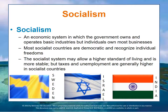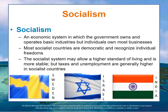Most socialist nations are democratic and they recognize basic individual freedoms. Socialist economies generally profess a kind of egalitarianism — equal distribution of income and social services — trying to reduce class differences. They believe their economies are more stable than those of other nations. Although this may be true, taxes and unemployment are generally high in socialist countries.